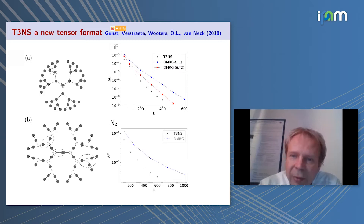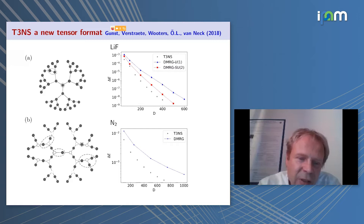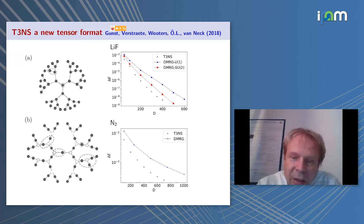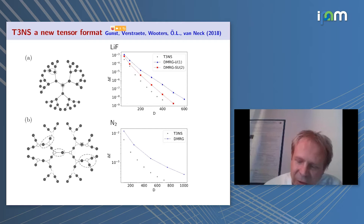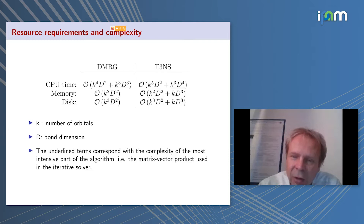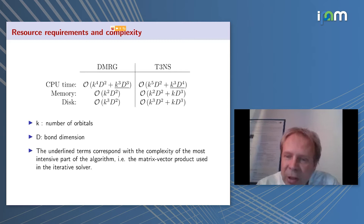Together with the group of Frank Verstraete and Dimitri Van Neck, Klaus Gunst made modifications to the tree by also including virtual tensors, creating a compromise between DMRG/MPS and pure trees. Benchmark calculations on molecules show that with fixed bond dimension, one or two orders of magnitude improvement can be achieved just by changing the tensor topology. However, considering the extra optimization cost and total CPU time, trees currently are at a similar stage as MPS/DMRG, so larger systems require further optimization.